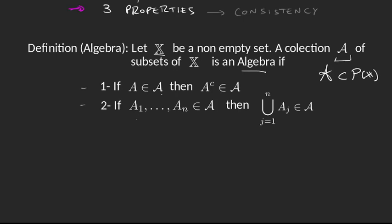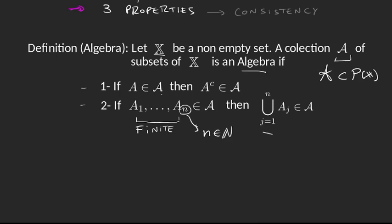The first property: whenever we grab an element in the algebra, its complement has to be there too. The second property: when we grab a finite number of sets in A — so n here is just a natural number — then the union of all those sets has to be in the algebra. When these two properties are satisfied for some collection A, then we can say A is an algebra.